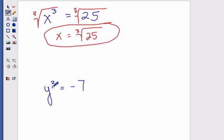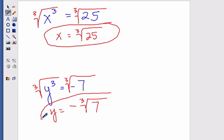So we do the same thing for y cubed equals negative 7. We take the cube root of both sides. And remember that when we have a negative inside of the root, we can pull that out as a negative on the outside of the root. You cannot simplify the 7, so your answer is just simply y equals a negative cube root of 7.